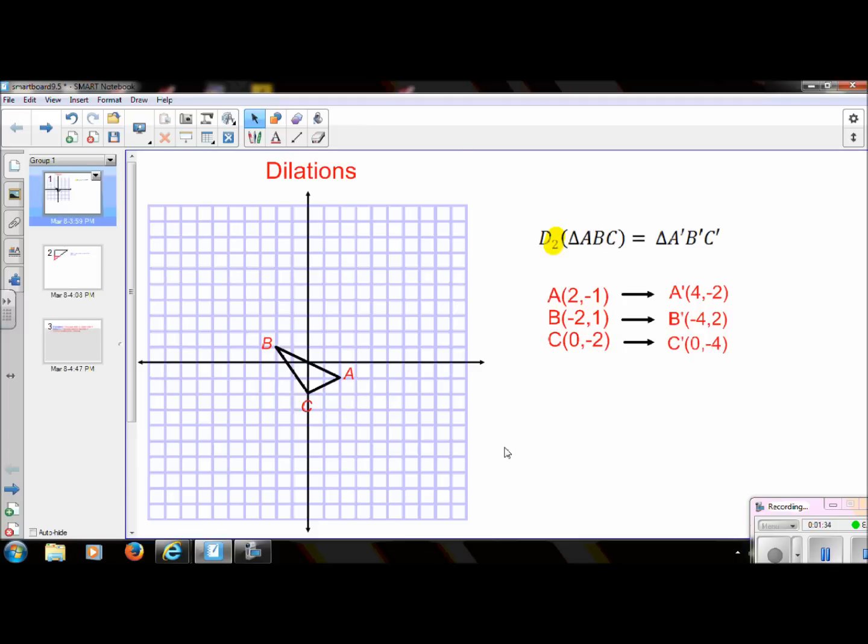Now that I have those coordinates, it's easy to graph. What we have done is increased this by a scale factor. Every single set of corresponding sides has been increased by a scale factor of 2.